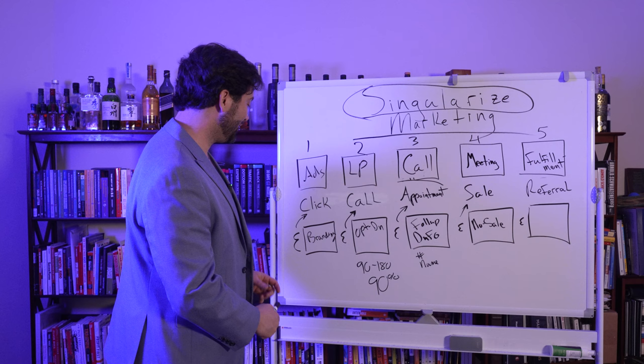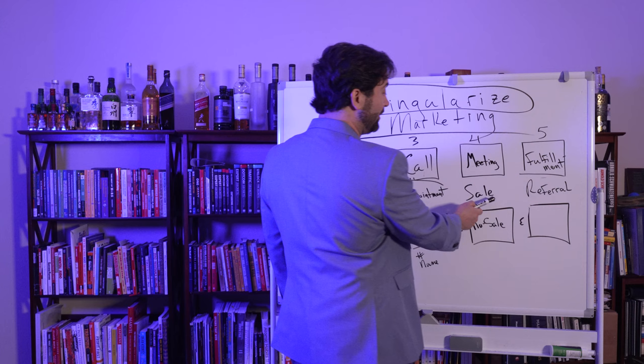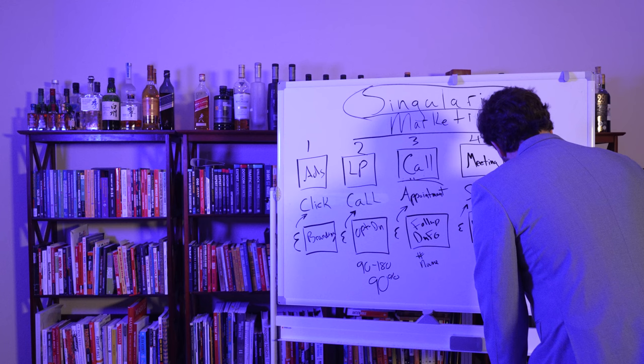You might be seeing some patterns with the exceptions. Click now — that's the goal; the exception is get a click later. Call now — the exception is get a call later. Appointment now — the exception is get an appointment later. Sale now — the exception is get a sale later.